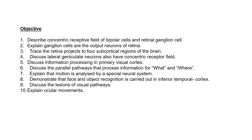During this lecture, we have to know the concentric receptive field of bipolar cells and retinal ganglion cells, the role of ganglion cells, the visual pathway from the retina to the visual cortex, the role of the lateral geniculate body in vision, information processing in the primary visual cortex, the parallel pathway to identify what and where, motion analysis, the role of the inferior temporal cortex in face and object recognition, the effect of lesions in the visual pathway, and the different types of ocular movements.